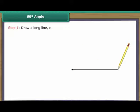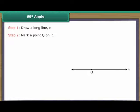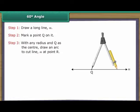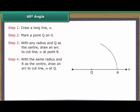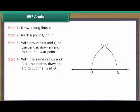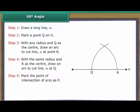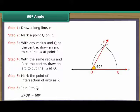Construction of 60 degree angle. Draw a long line M and mark a point Q on it. With any radius and Q as the centre, draw an arc to cut line M at point R. With the same radius and R as the centre, draw an arc to cut the first arc. Mark the point of intersection as P. Join P to Q. Angle PQR is formed and equals 60 degrees.